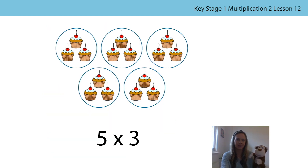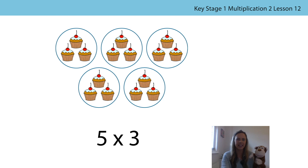Have a look at this picture. What does the picture show? Bunga says that he can see five groups. Do you agree with him? We can see that we have circled our groups, and yes, he's right — there are five groups. He also says that there are three cupcakes in each group, so this means that there are five threes.